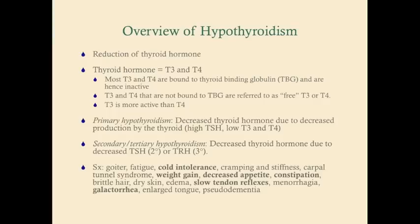The boldfaced ones are probably the most important to remember that come up the most on the test. I want to highlight galactorrhea — remember that TRH stimulates the production of both TSH and prolactin. So if you have decreased thyroid hormone, it's going to increase your TRH because of the decreased negative feedback. And if you have increased TRH, you have an increased production of prolactin, which can cause galactorrhea.